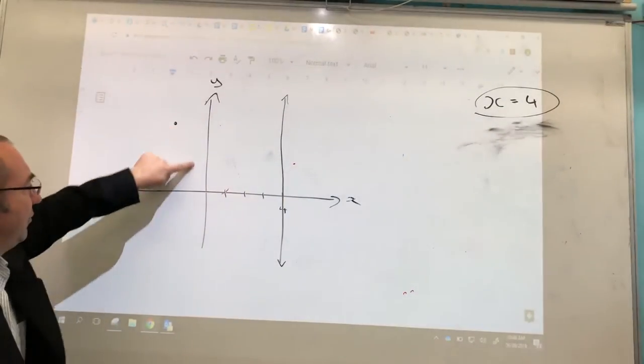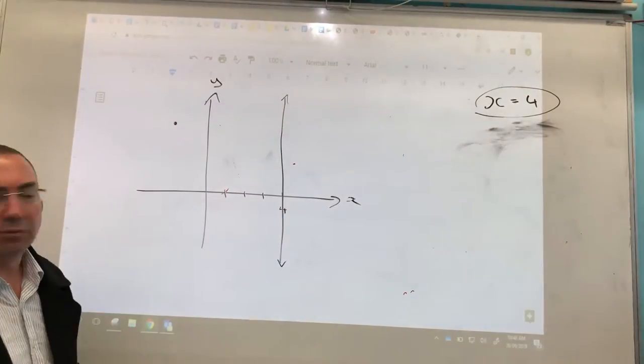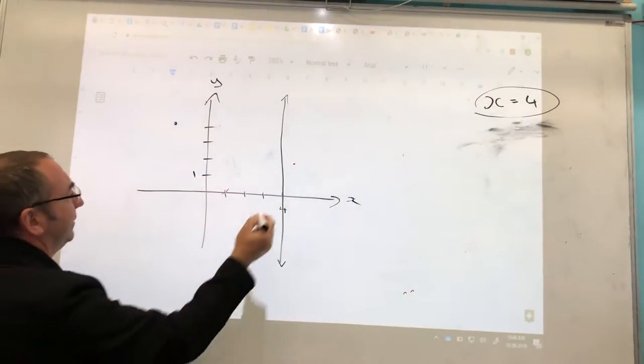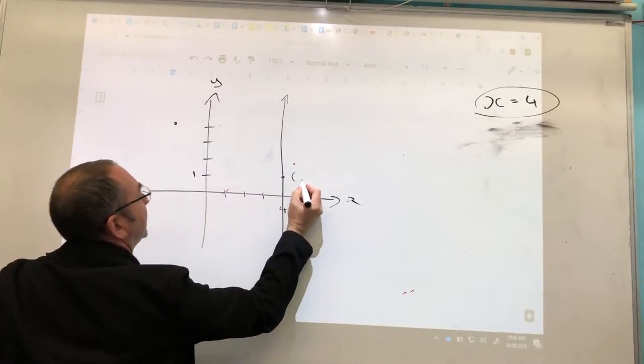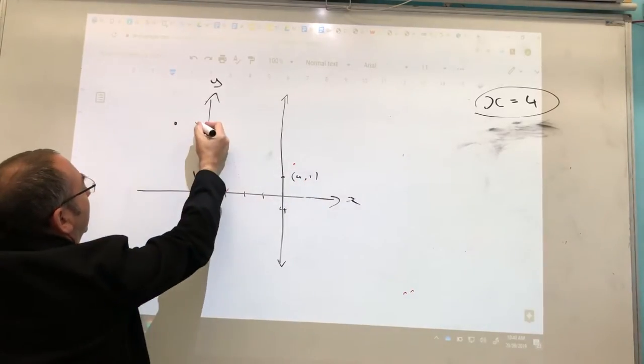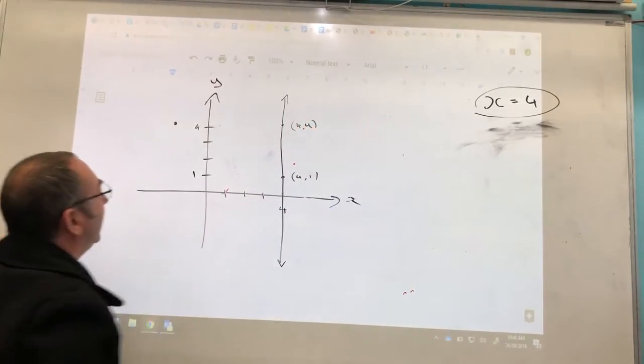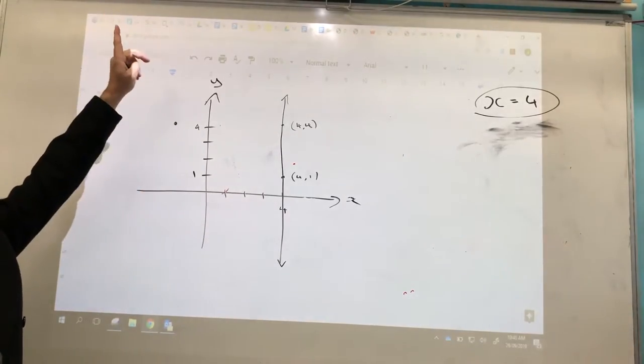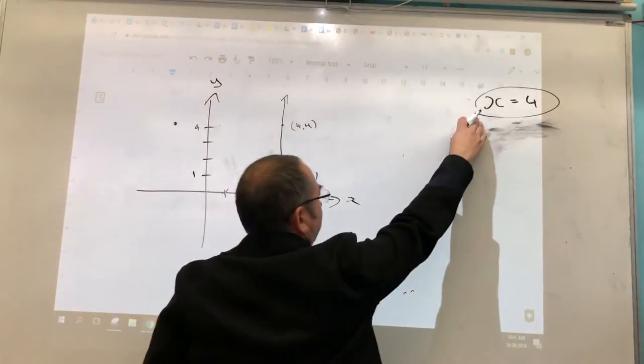For all values of y, doesn't matter what the value of y is, x is equal to 4. So you can choose any point, any value of y. At y equals 1, x equals 4. At y equals 4, x equals 4. At y equals 200 million, all the way up there in outer space, x is still going to be 4. So that's what x equals 4 looks like.